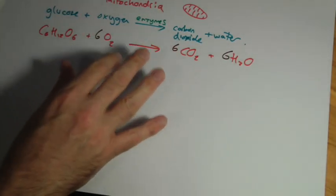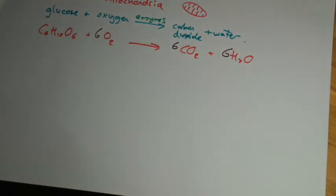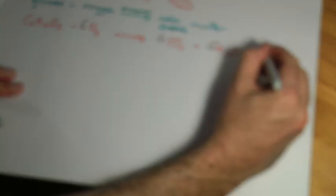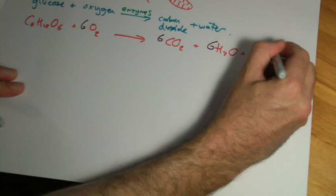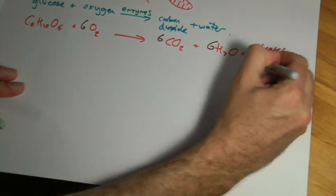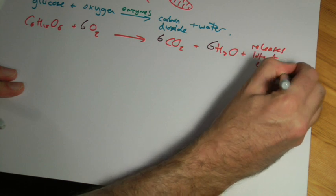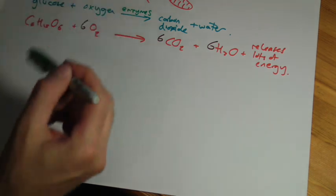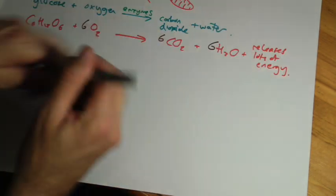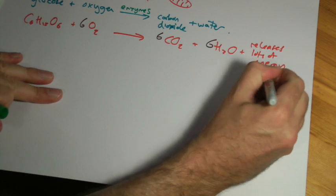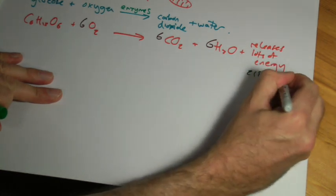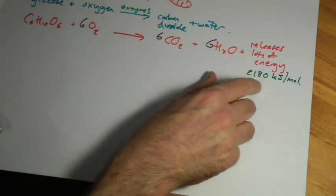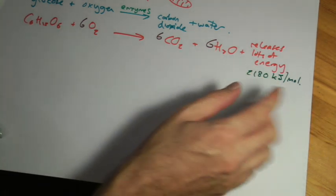Now what I don't like too much in the way that it's done in GCSE, we say things like, well it releases energy, or it releases lots of energy, and it's a bit fuzzy, it's not really clear what's happening. The problem is, at GCSE you don't need to remember exactly what this means. At A level, we give you a number, it's 2180 kilojoules per mole. Now don't worry if you don't know what that means, it just means that's how much energy is released for a certain amount of glucose.